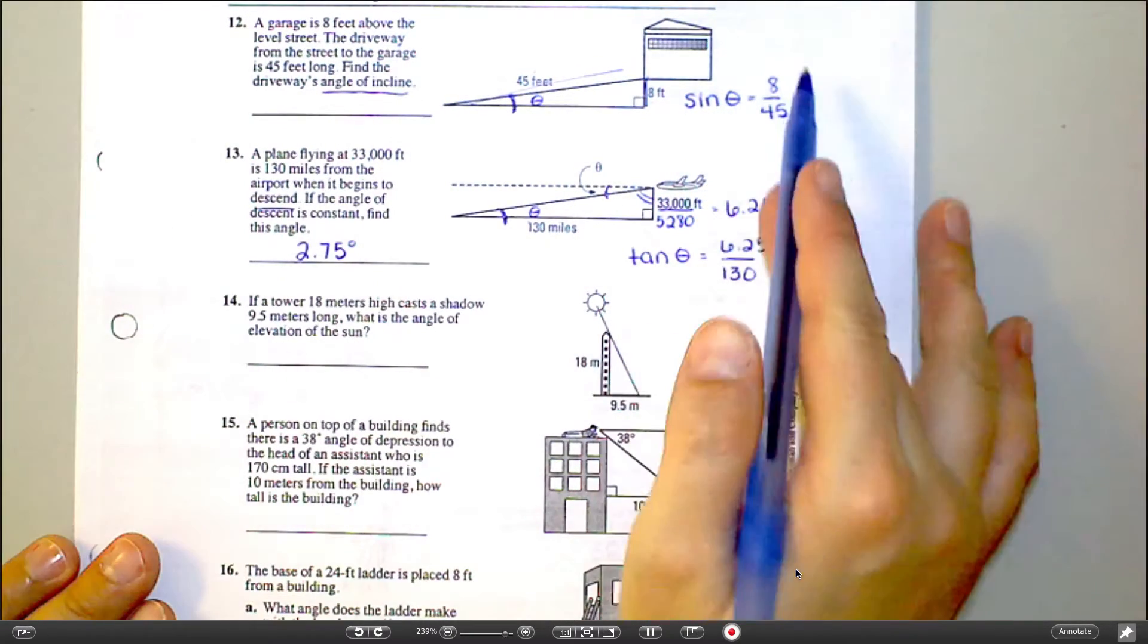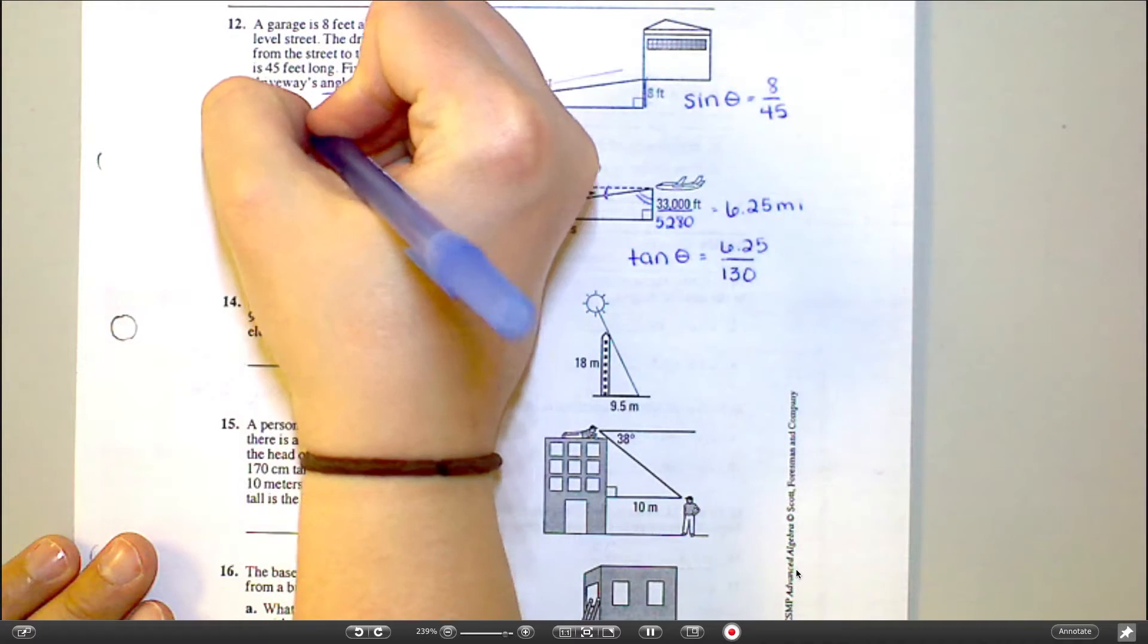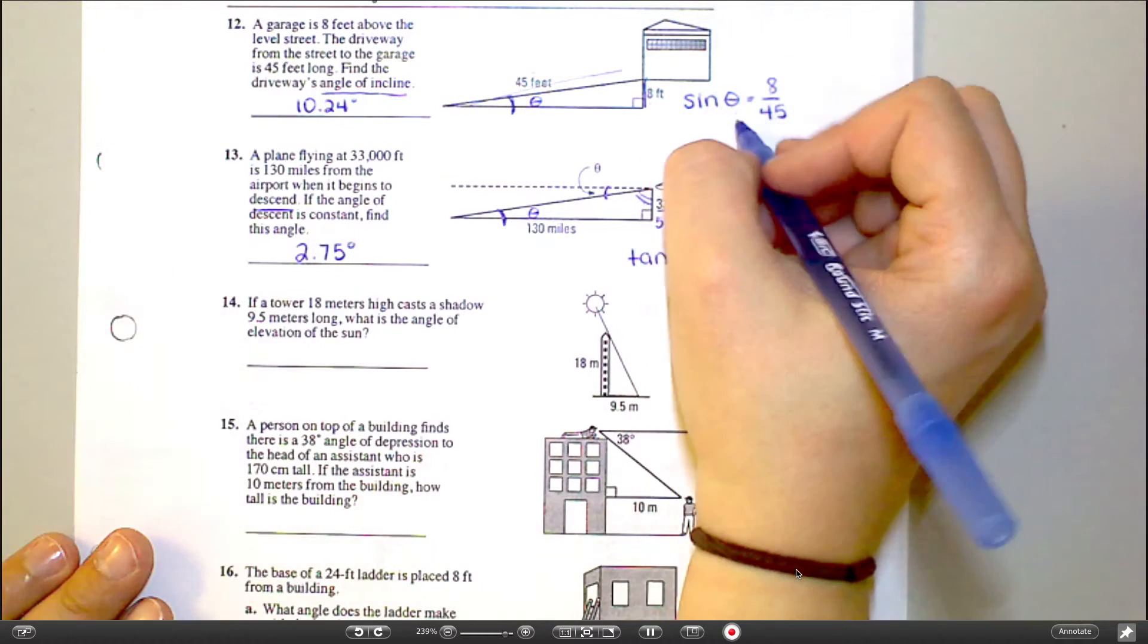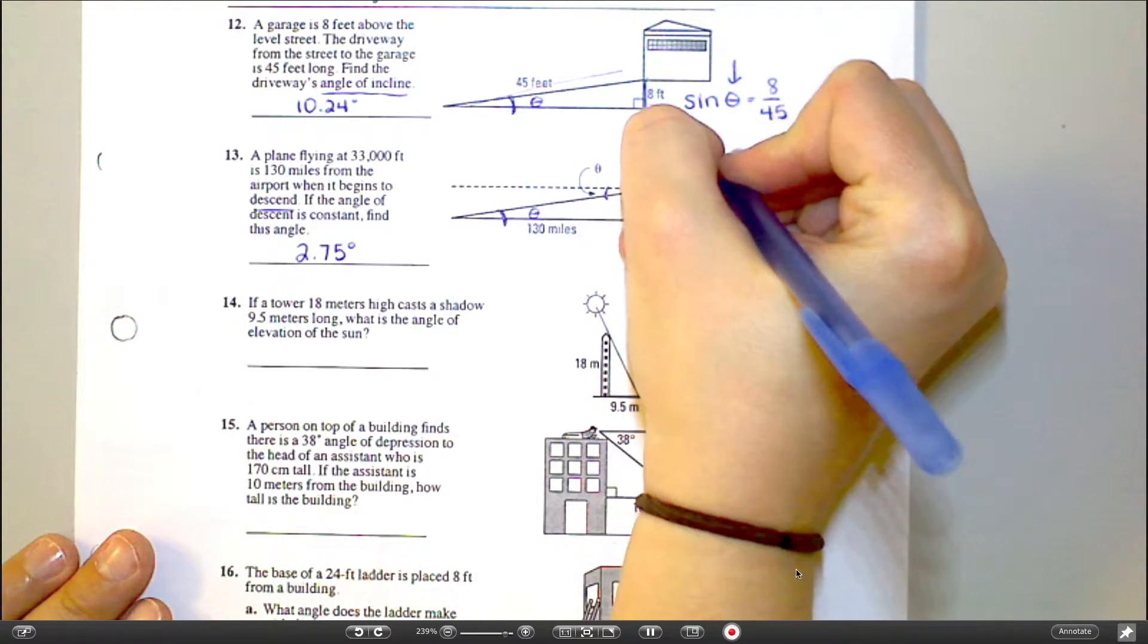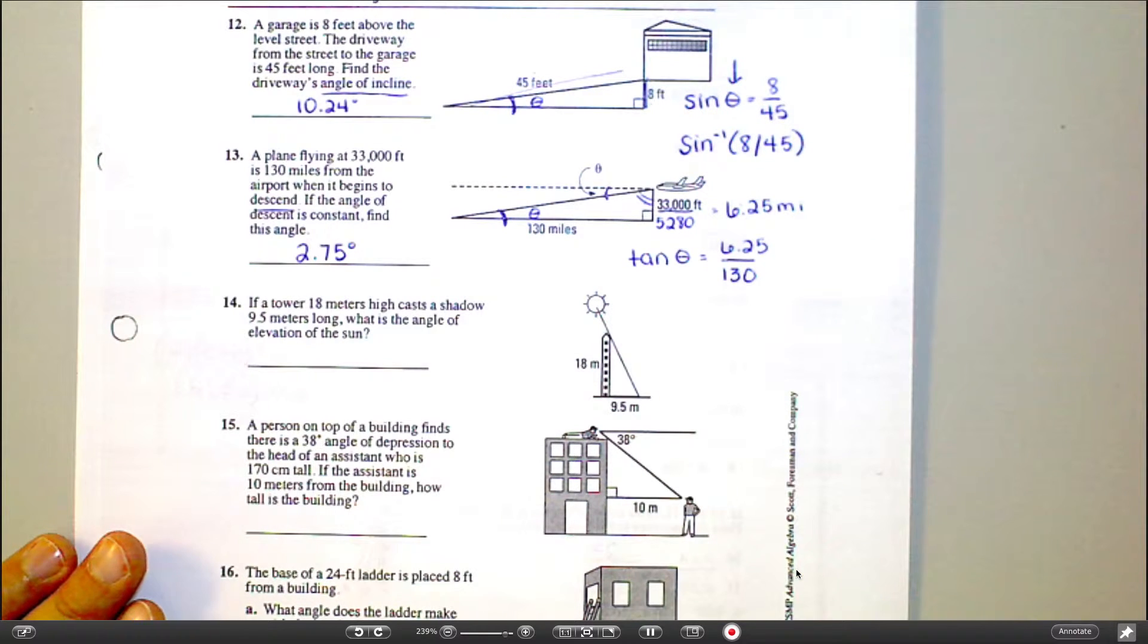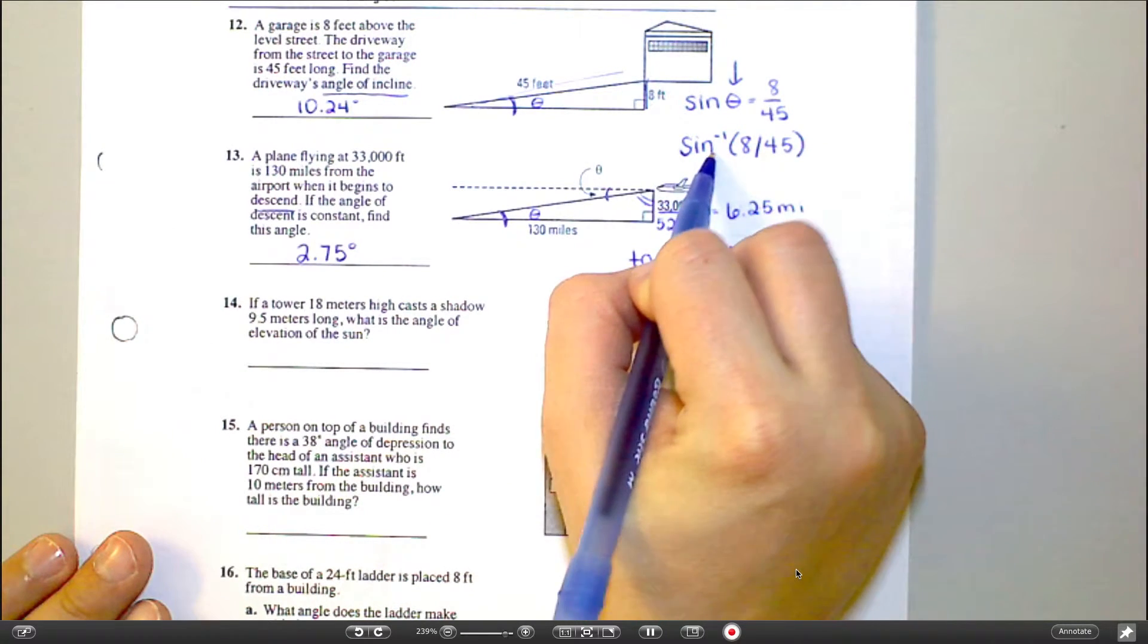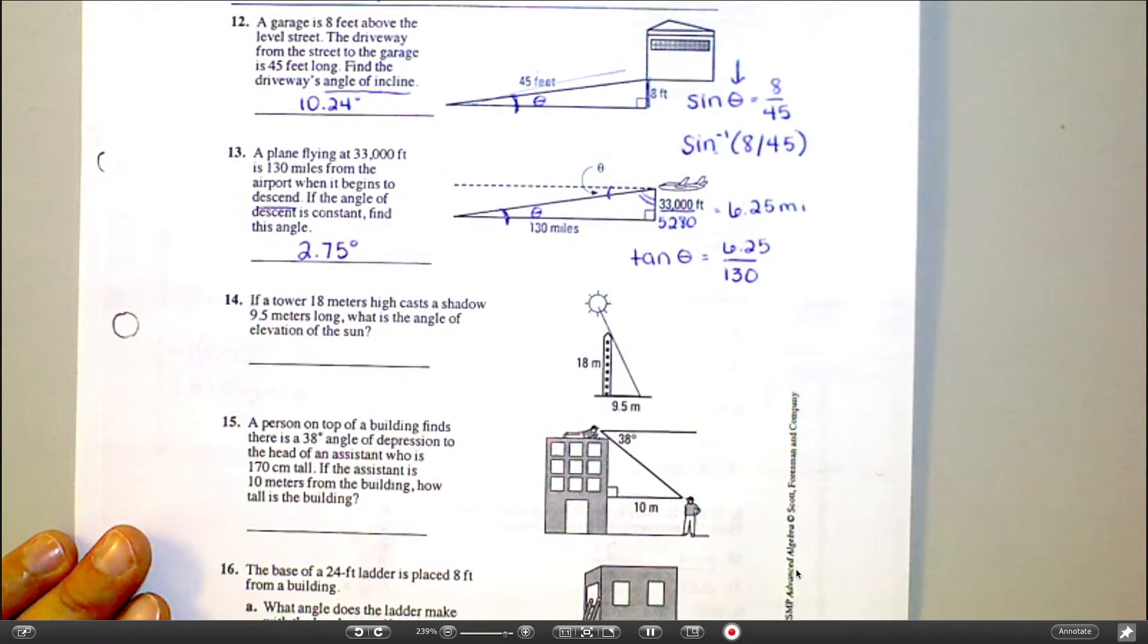Good. So I would say sine of theta equals opposite over hypotenuse, so 8 over 45. And then you're going to do second sine of 8 divided by 45. I got 10. Okay, good. The people getting 1, what did you type into your calculator? But remember that when you're solving for, you can't type in sine of 8 over 45. You would do sine negative 1 of 8 over 45. So anytime you're trying to find the angle, you're going to use the negative 1 sine.